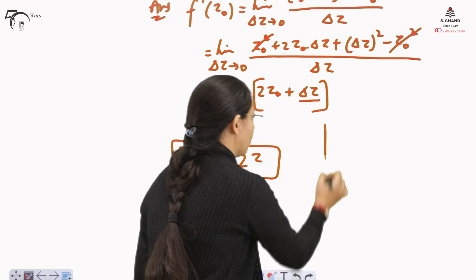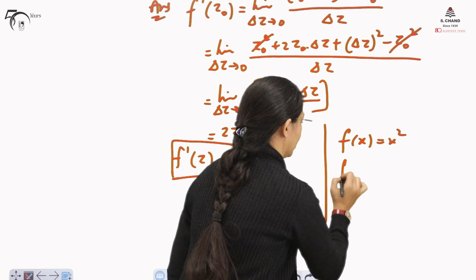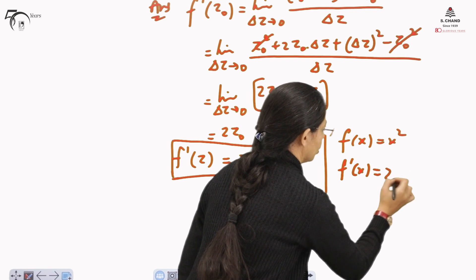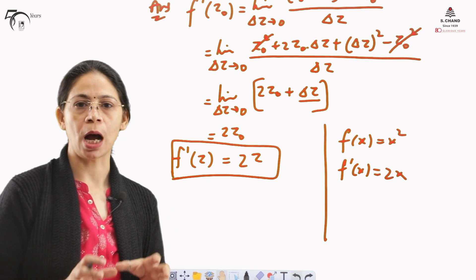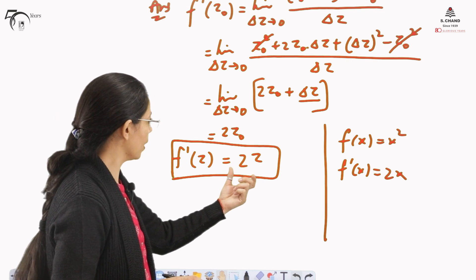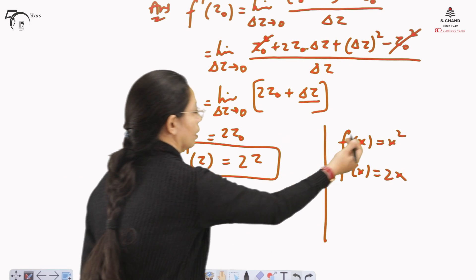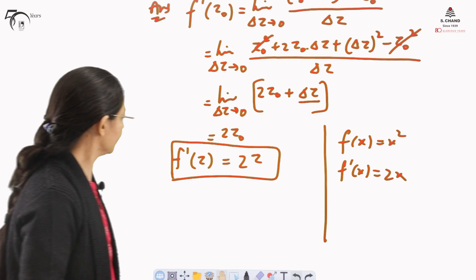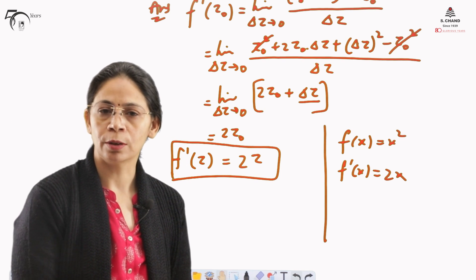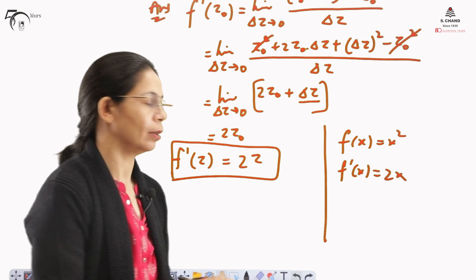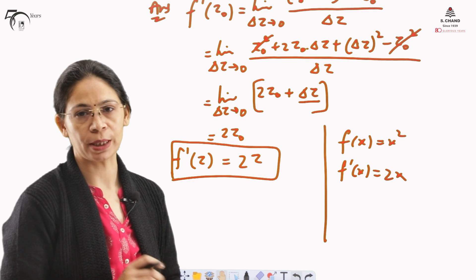If you recall, for a real function, if f(x) = x², then f'(x) = 2x. So we can say that the differentiation rules are the same for complex functions as they are for real functions. That is how we have seen that the derivative of a complex function can be taken, and we have shown how to find it using the definition of differentiation.